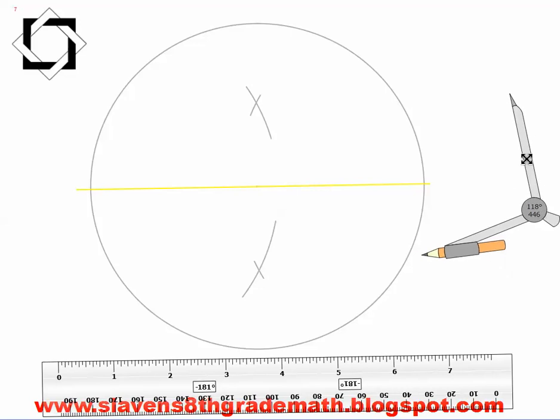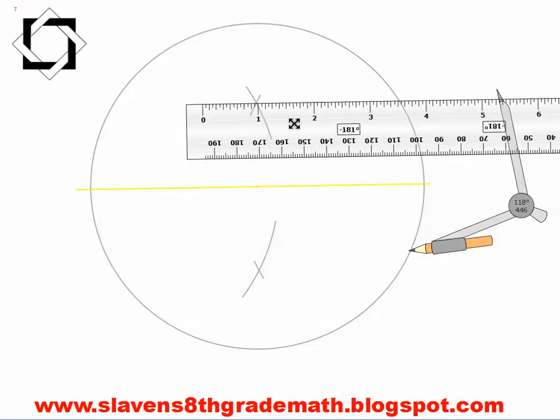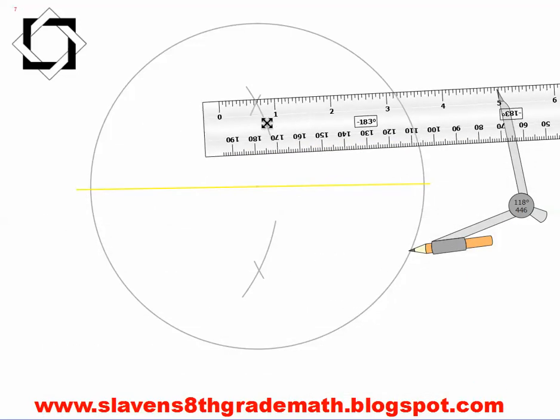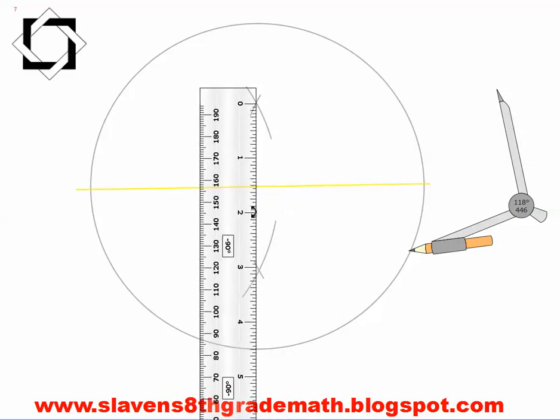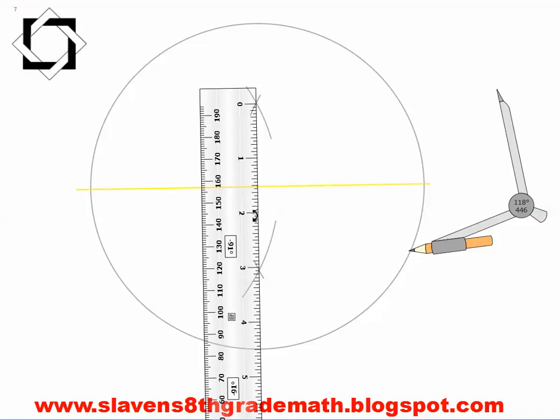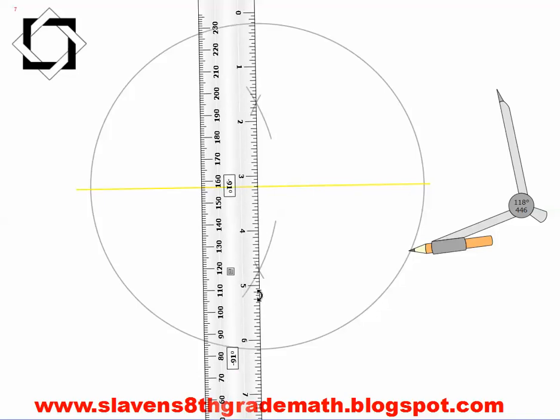Now I have two, a pair, of intersecting arcs. One is above the center point and one is below the center point. Then I'm going to take my ruler and I'm going to connect my two intersecting arcs and create a new diameter.